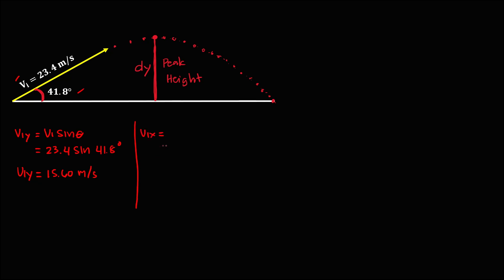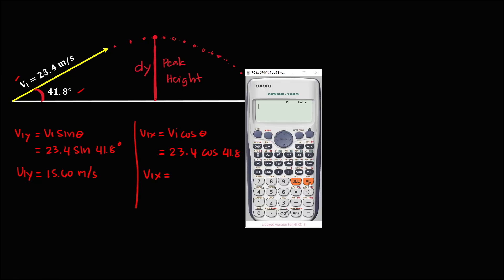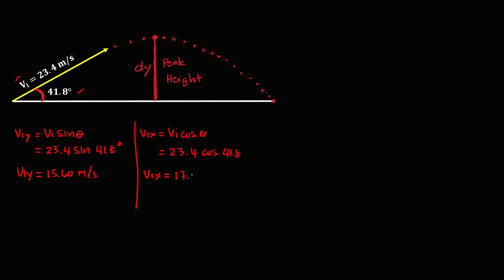For the horizontal component, vix or the initial velocity for x, the formula is: initial velocity times cosine theta. The initial velocity is 23.4 and the angle is 41.8 degrees. So vix equals 23.4 times cosine 41.8, which equals 17.44 meters per second.